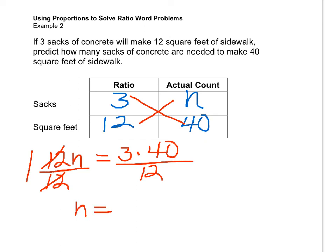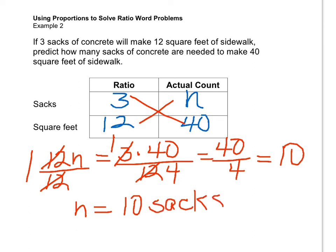And then to solve the right side of this equation, we can see that canceling will simplify the problem for us. Both 12 and 3 are divisible by 3. So 3 divided by 3 equals 1, 12 divided by 3 equals 4. 1 times 40 is 40, and then bring over our 4. Now we have 40 divided by 4, which equals 10. n equals 10. It will take 10 sacks of concrete to make 40 square feet of sidewalk.